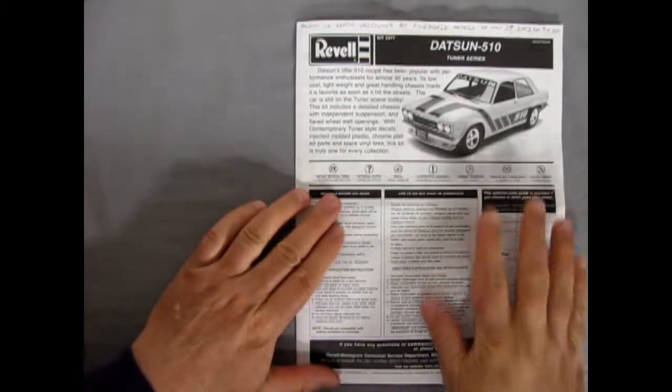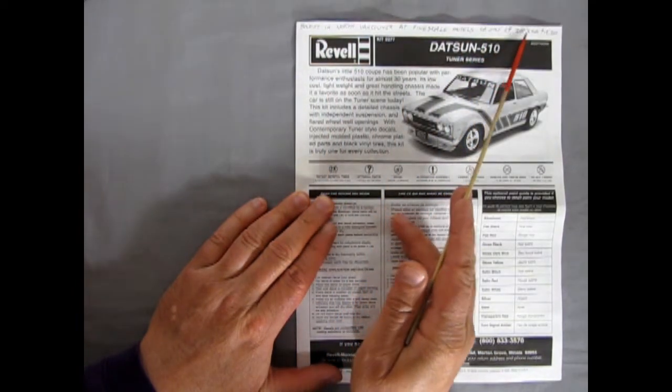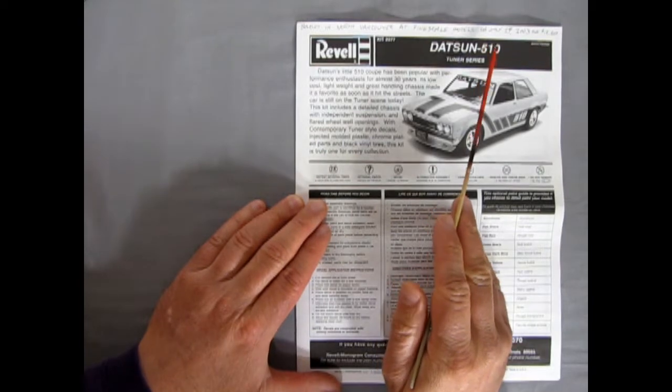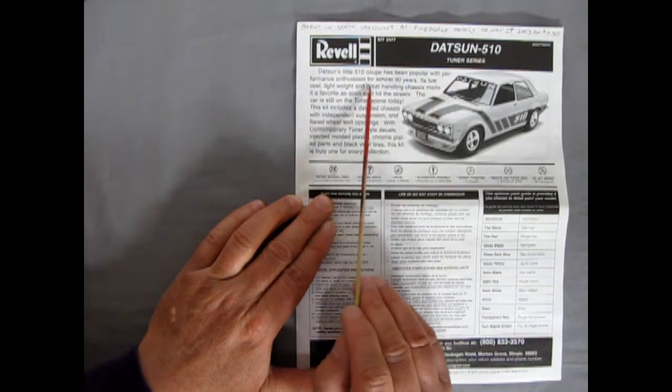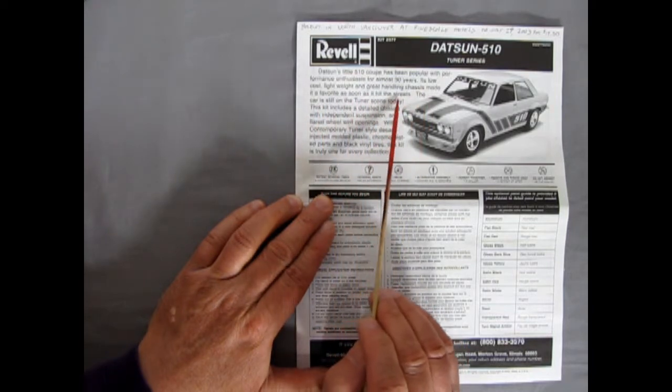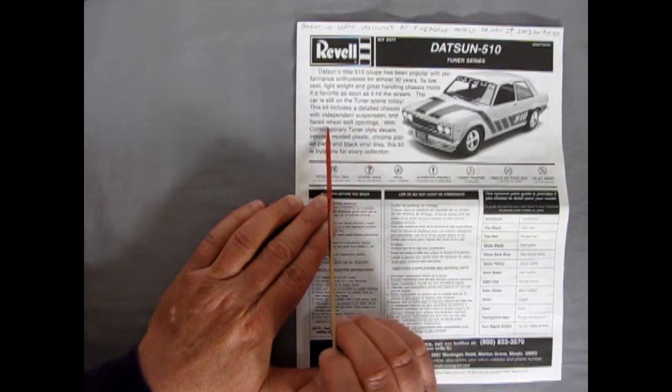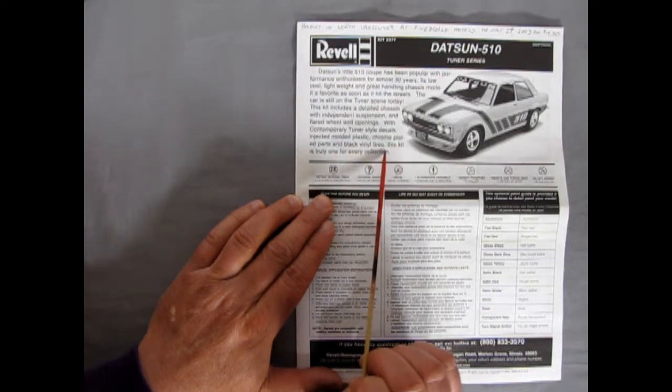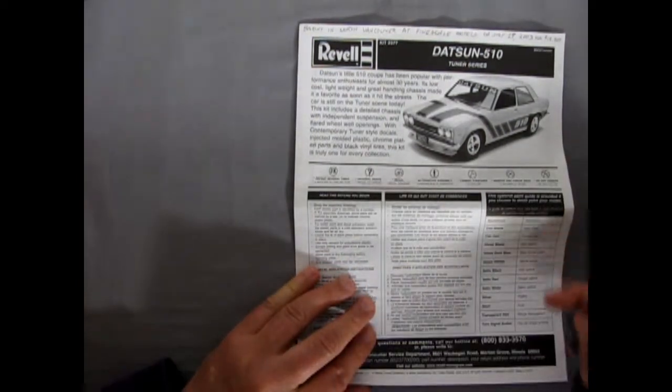And here we have our instruction sheet with a bit of history on the Datsun 510. But I bought this in North Vancouver at Fine Skill Models on July 29th 2003 for $19.50 which was pretty high priced back then. Most models were still going around $10 to $15 Canadian. Datsun's little 510 coupe has been popular with performance enthusiasts for almost 30 years. It's low cost, lightweight and great handling chassis make it a favorite as soon as it hit the streets. The car is still on the tuner scene today. This kit includes a detailed chassis with independent suspension and flared wheel well openings. With contemporary tuner style decals, injected molded plastic, chrome plated parts and black vinyl tires, this kit is truly one for every collection. Well I got it in my collection and here they give you a paint chart.